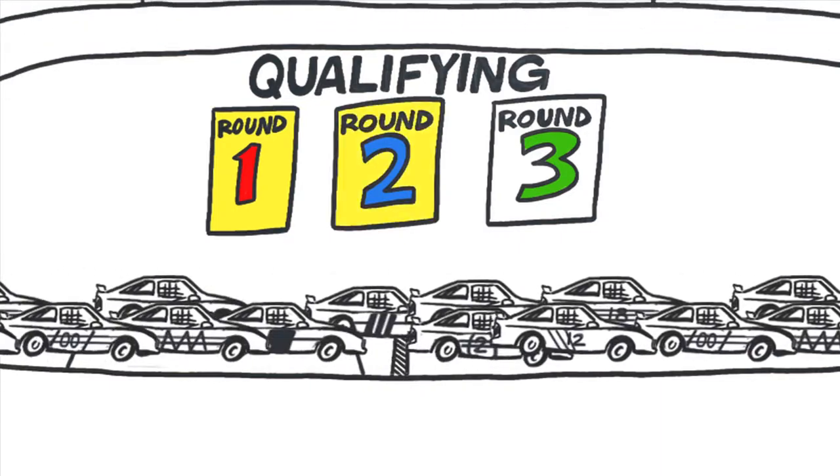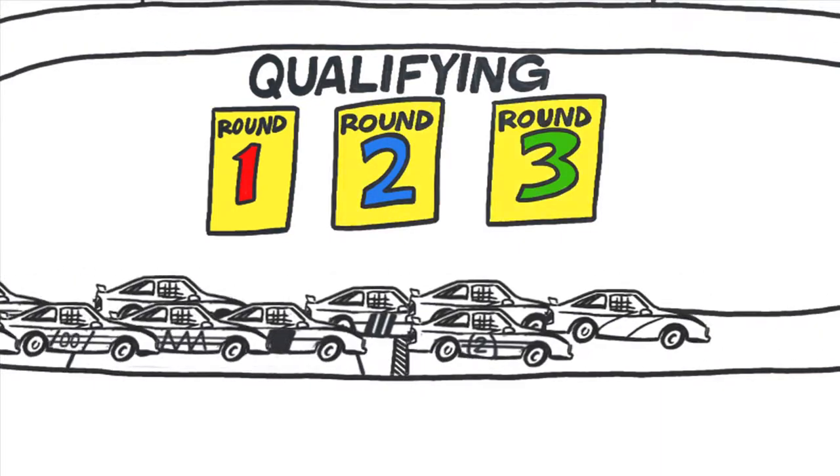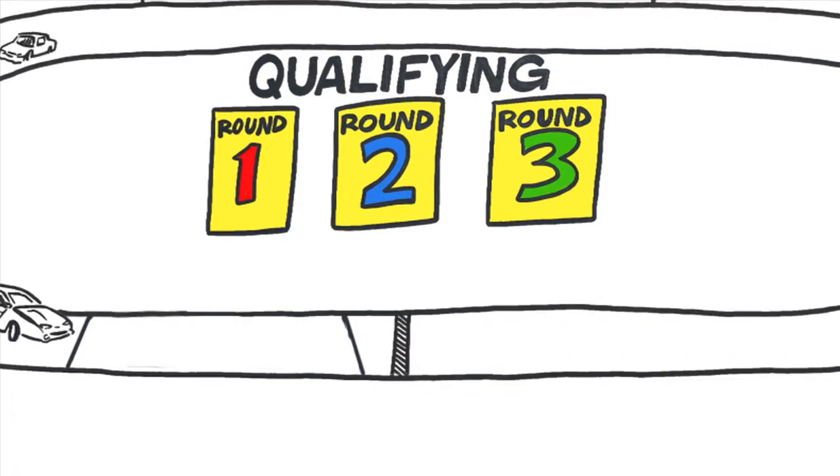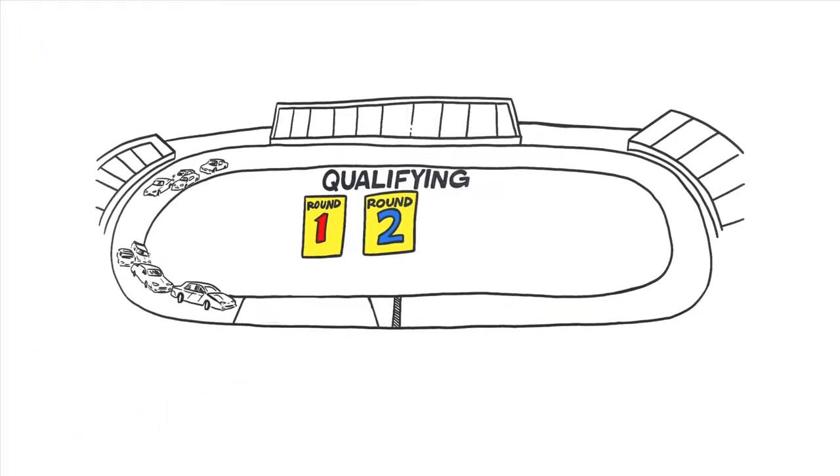The fastest cars move on, the slowest say goodbye. Fastest of them all is your pole sitter. On those short tracks, same deal, just two rounds.